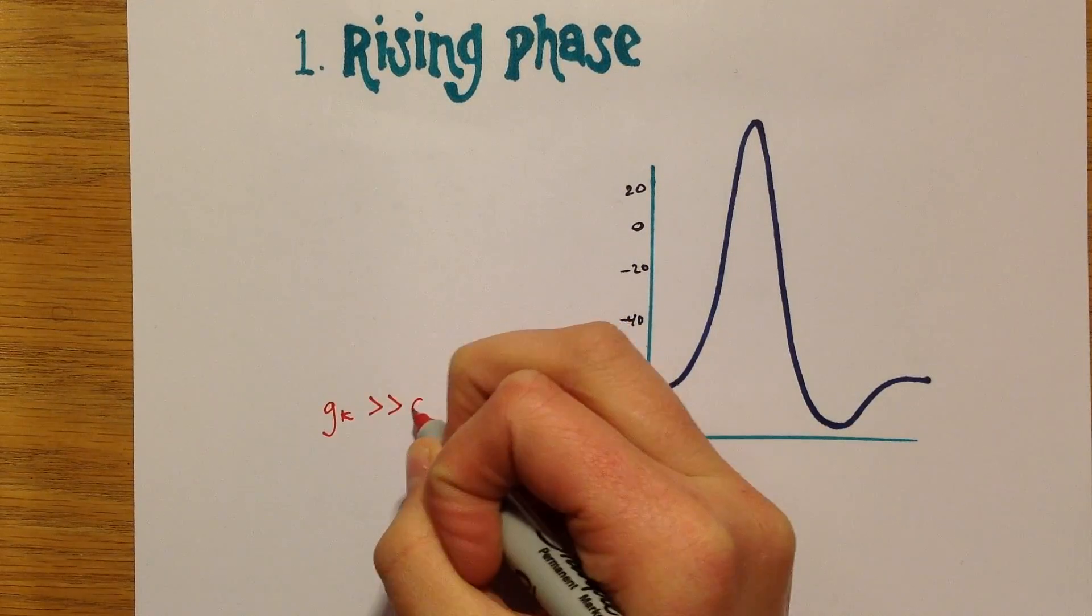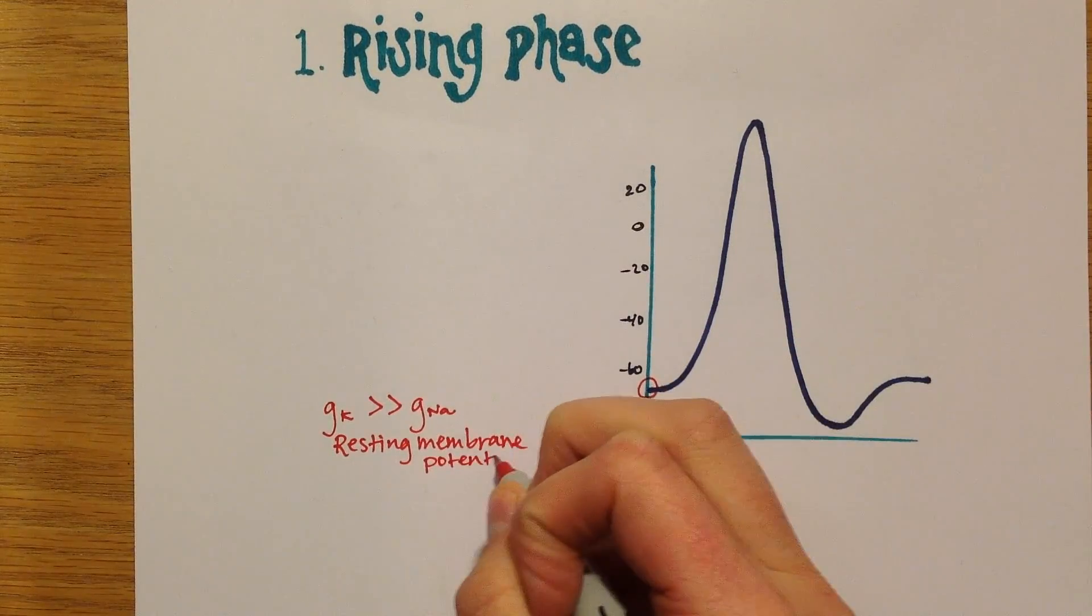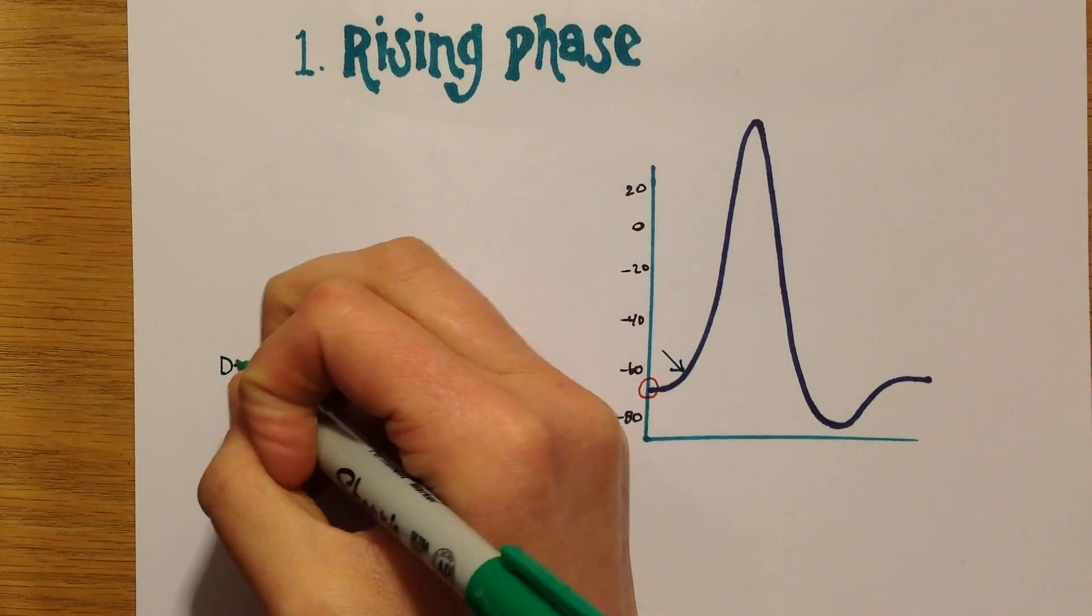Let's go through each stage in greater detail. At about negative 70 millivolts, the conductance of potassium in the cell is greater than the conductance of sodium, and the cell is at its resting membrane potential.